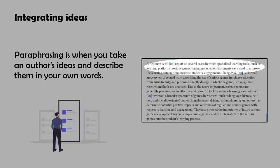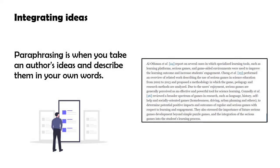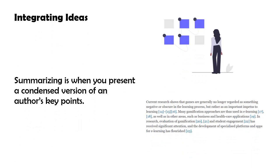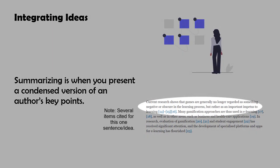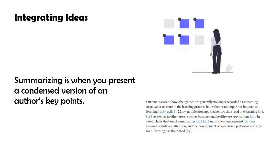Paraphrasing is when you take someone else's ideas and describe them in your own words. Summarizing is when you present a condensed version of an author's key points. Keeping this in mind will help you integrate sources into your paper without fearing accusations of plagiarism.